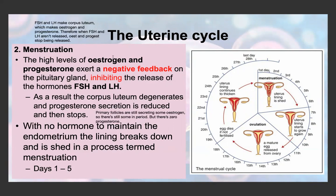Because there's nothing maintaining the corpus luteum, there's nothing secreting estrogen and progesterone, since the corpus luteum was the one secreting these hormones. And because estrogen and progesterone are no longer being secreted, there's nothing maintaining the endometrium — so it sheds during menstruation, around days one to five.